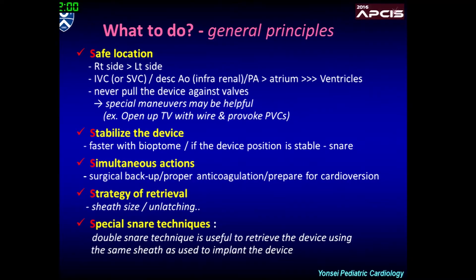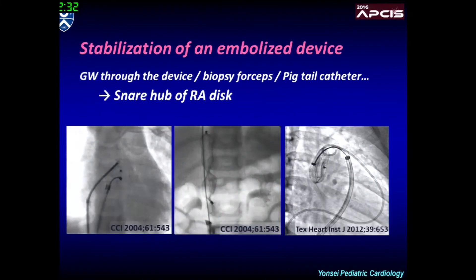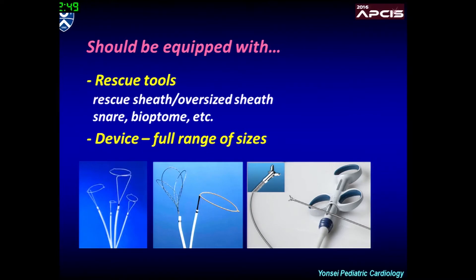You may snare the RA hub from the beginning. However, gripping the wire mesh using a bioptome is usually faster for initial stabilization to prevent migration. Simultaneously, team members other than the operators may take actions like calling for surgical backup, ensuring proper anticoagulation, and preparing for cardioversion just in case. Then you can take time for a detailed strategy to retrieve the device, including some special techniques. The cath lab should be properly equipped with various rescue tools.